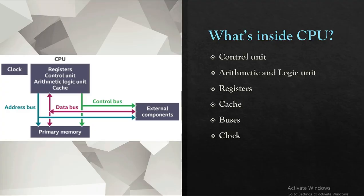What is inside the CPU? Control Unit, Arithmetic and Logical Unit, Registers, Cache, Buses, and Clock. We are going to talk about what's inside the CPU.